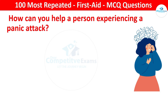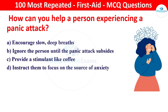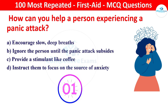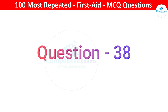Next question: how can you help a person experiencing a panic attack? Your options: encourage slow and deep breaths, ignore the person until the panic attack subsides, provide a stimulant like coffee, or instruct them to focus on the source of anxiety. The right answer is encourage slow, deep breaths. Deep breathing can help calm the person and alleviate symptoms of a panic attack.